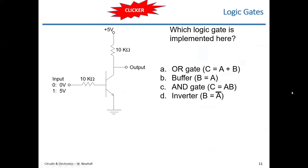Let's do a clicker — try to figure out what this circuit is doing. You have a single transistor in a circuit with one input on the left, one output, and a power supply. You know how logic chips have power supply pins — this terminal at the top and at the bottom would connect to the power supply pins. Which logic gate is implemented here with this circuit?